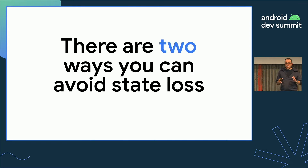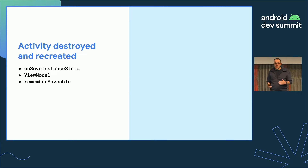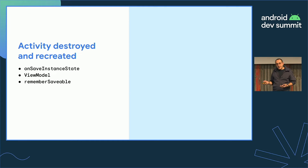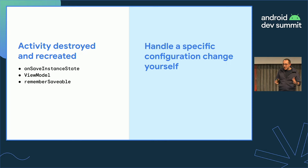There are basically two ways you can avoid losing your state. The first way is to let the system handle the activity destruction and recreation, leveraging saved state, view models, or remember savables. The other is handling a specific set of configuration changes in your code.